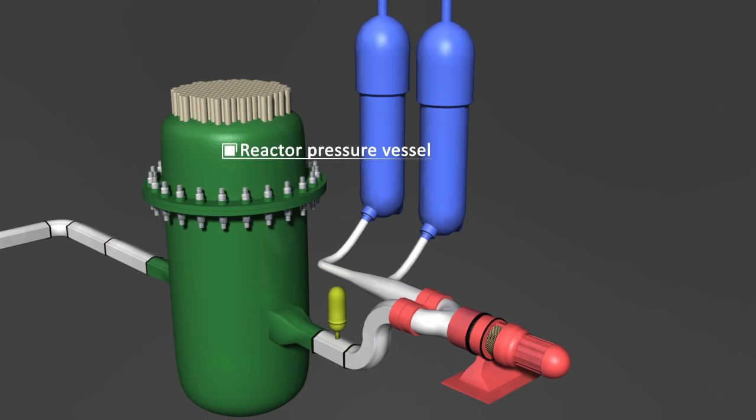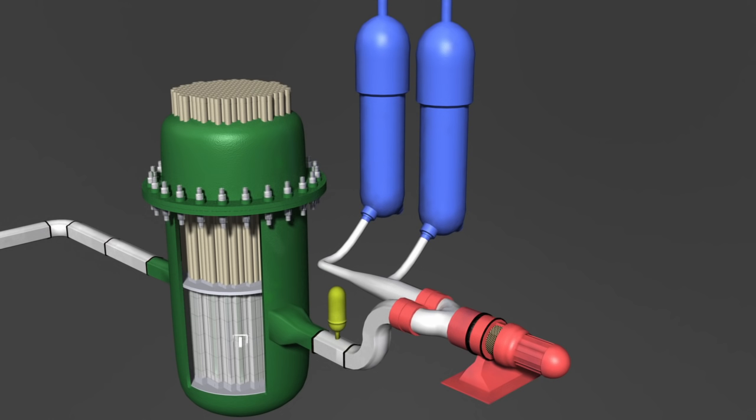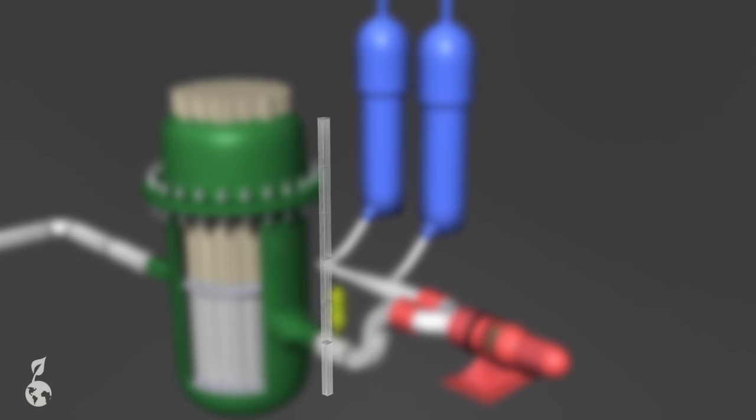In a pressurized water reactor, as in this case, the reactor pressure vessel stands about 12 meters tall. The walls are about 25 centimeters thick. Inside is where the fuel assemblies can be found. In pressurized water reactors, about 150 such assemblies are installed.